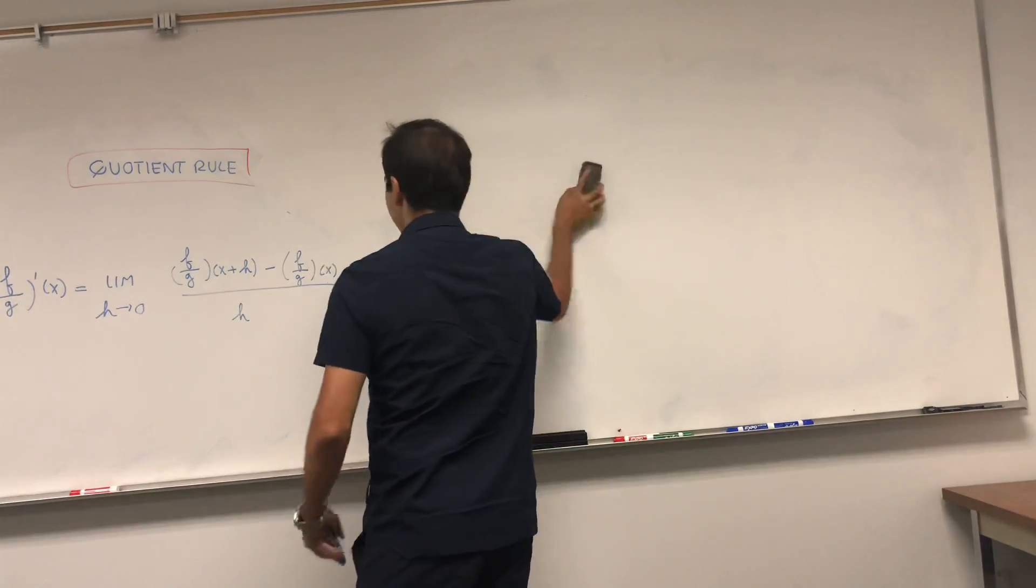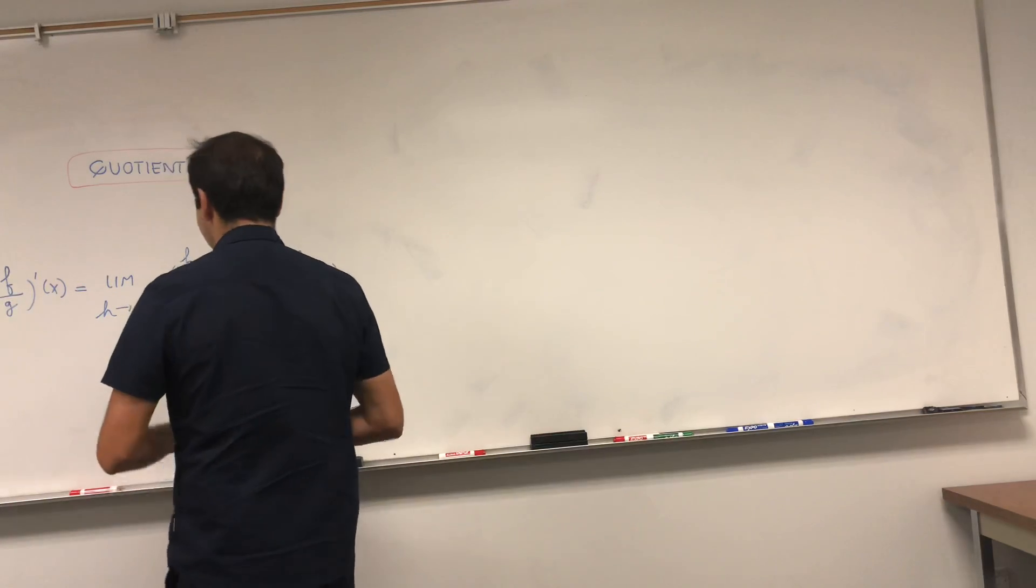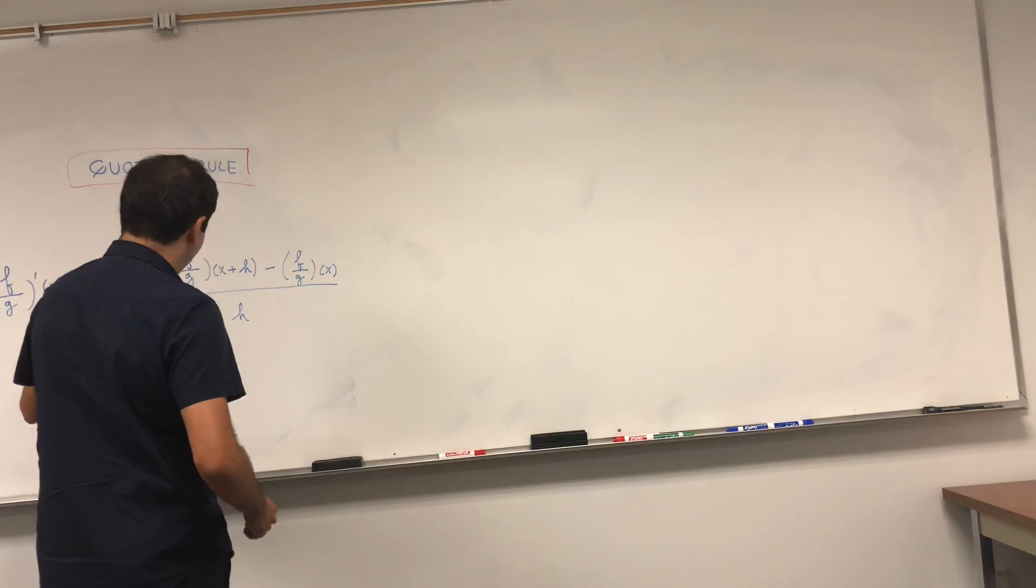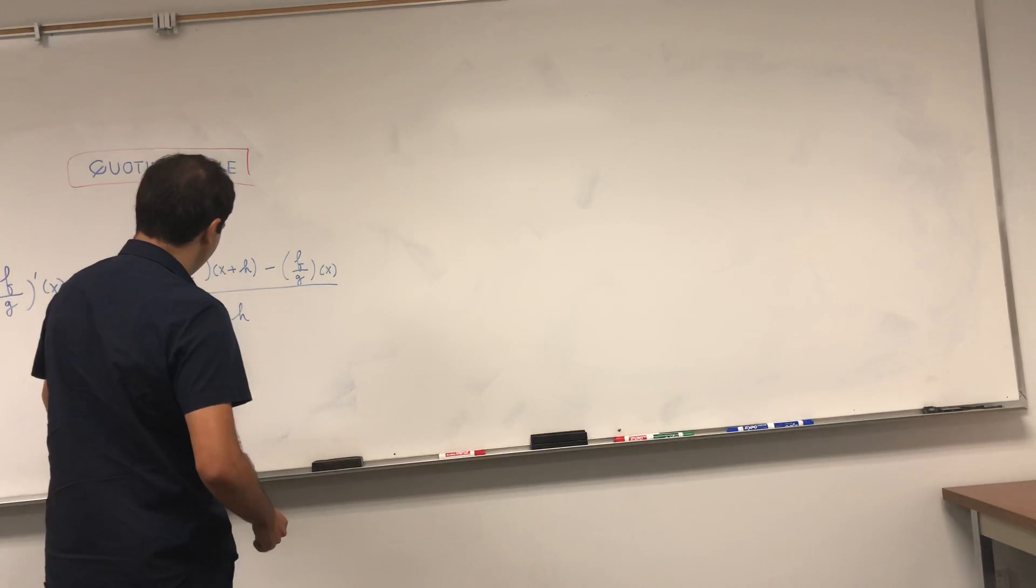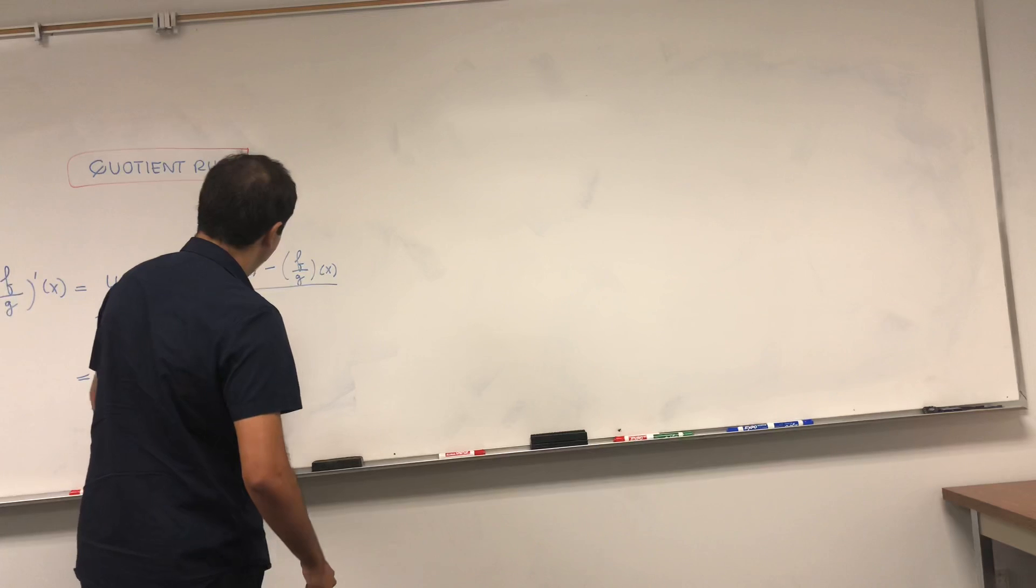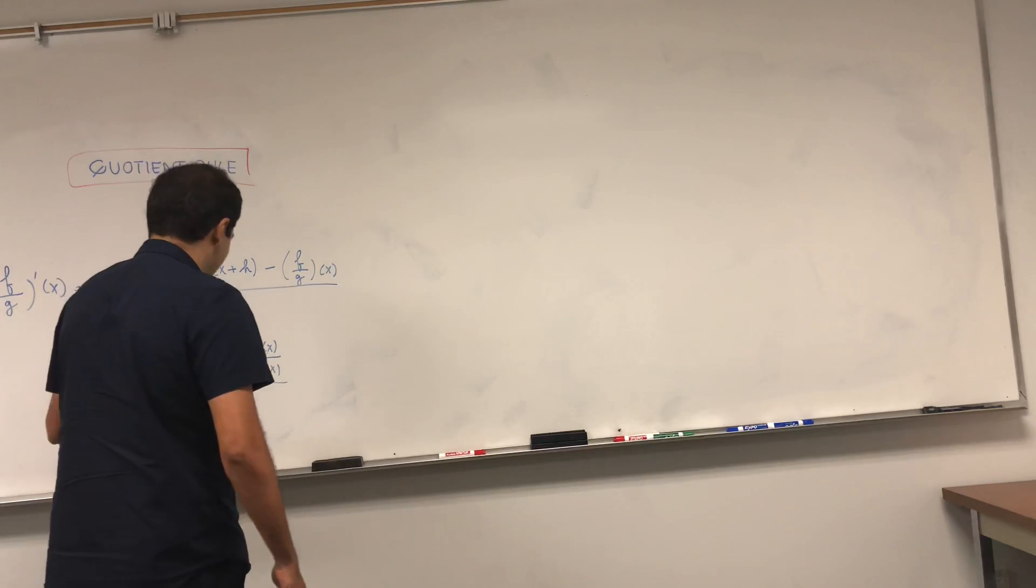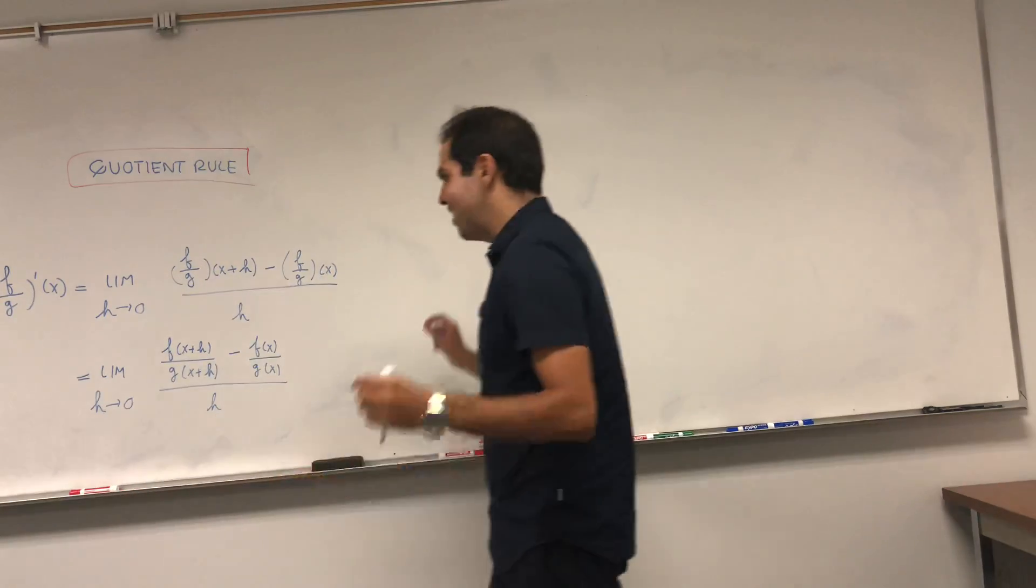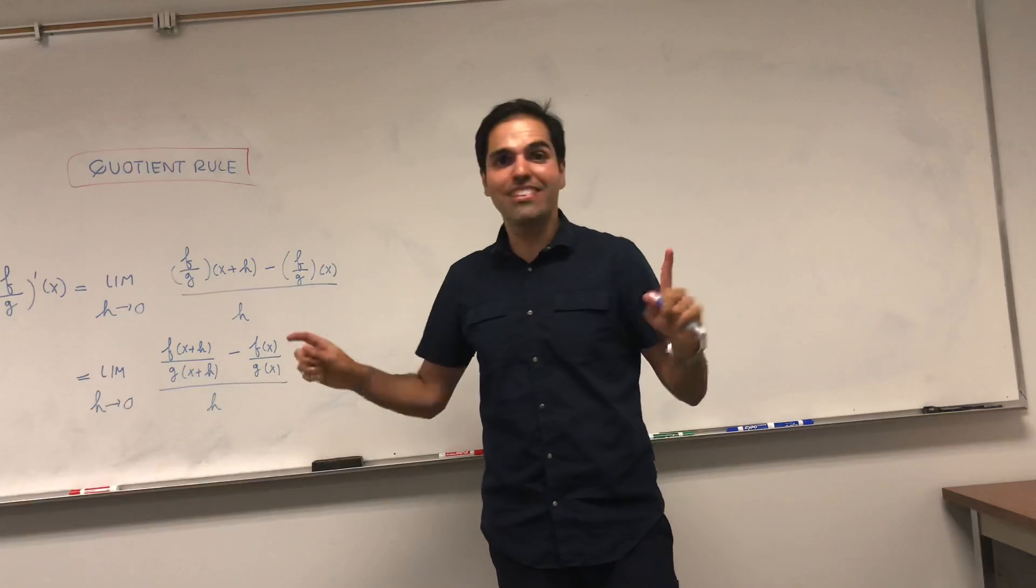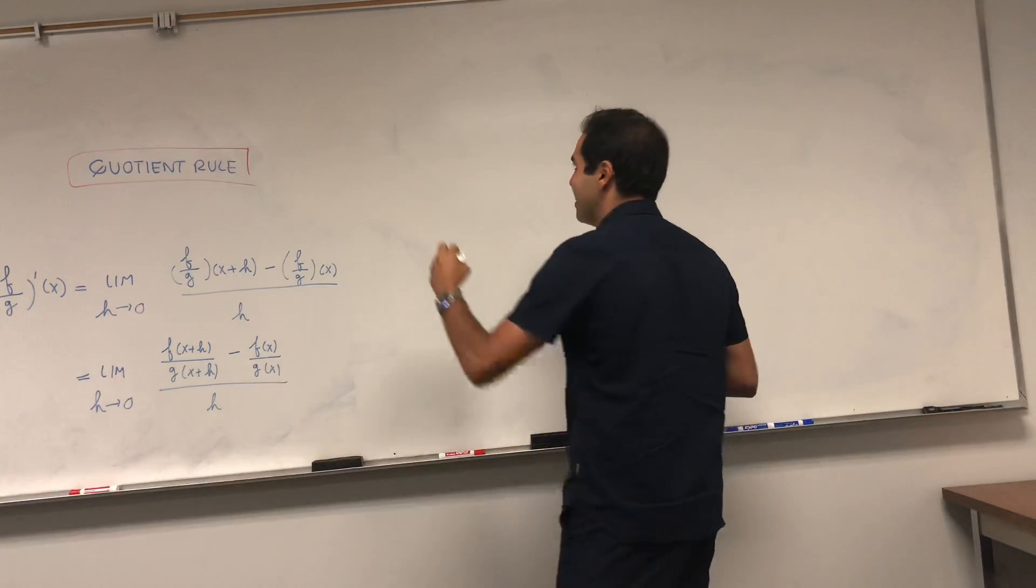And then let's now use the definition of f over g. That just means limit h goes to zero of f of x plus h over g of x plus h minus f of x over g of x divided by h. And now you have this difference of ratios, and that just screams out to be put on a common denominator.